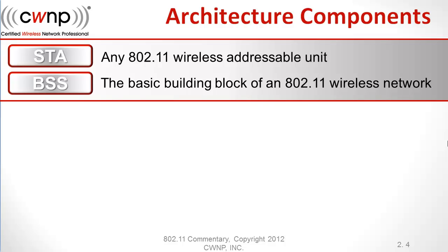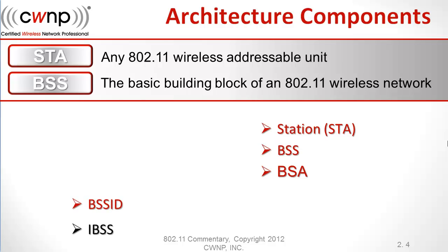The basic service set acts as the core unit on which we build small and large wireless networks. We have to understand the station, the BSS, and the BSA. The station is the easy part — we've already talked about that. Then we'll have to talk about the BSSID and the IBSS as well.